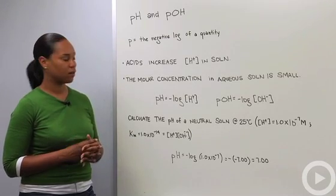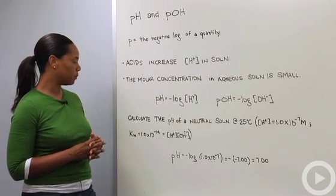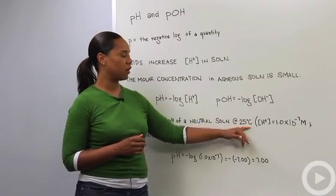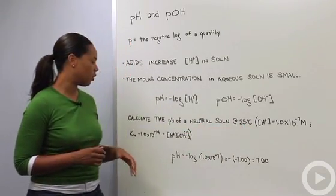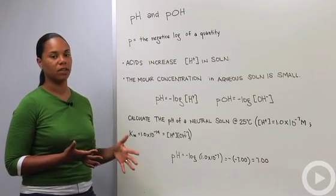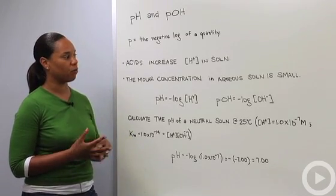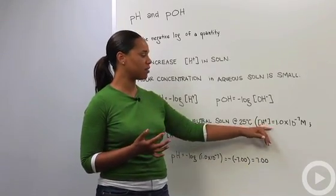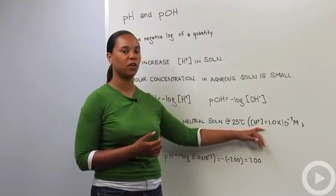So let's do the most basic example. Let's calculate the pH of a neutral solution at 25 degrees C. So if something is neutral, what does that mean? We'll see in a second, it means that you have a pH of 7.